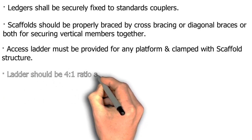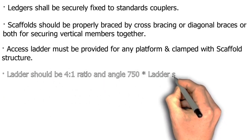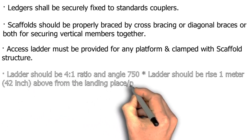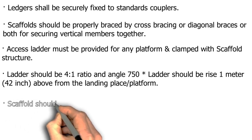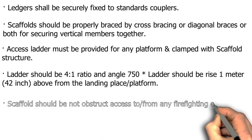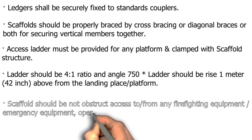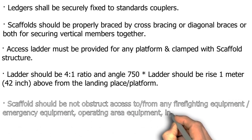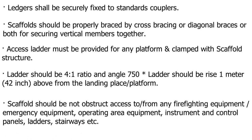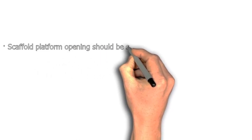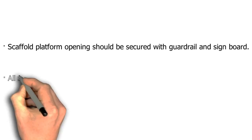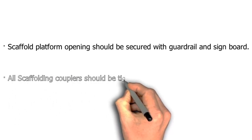Scaffolds should be properly braced by cross-bracing or diagonal braces for securing vertical members together. Access ladders must be provided for any platform and clamped to the scaffold structure. Ladder ratio should be 4:1 and angle 75°. Ladder should rise 1 meter (42 inches) above the landing platform. Scaffolds should not obstruct access to firefighting equipment, emergency equipment, operating area equipment, instrument and control panels, ladders, stairways, etc. Scaffold platform openings should be secured with guardrails and sign boards. All scaffolding couplers should be tightened.